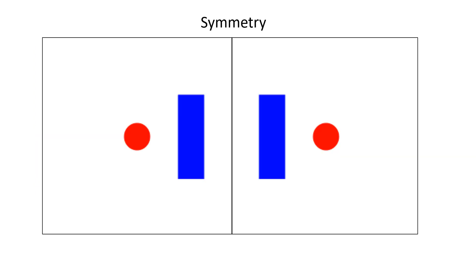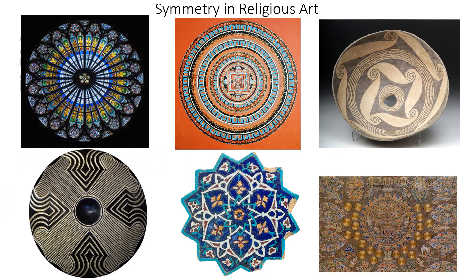Symmetry is where one side is a mirror image of the other — symmetrical compositions. Symmetry is used a lot in religious art in various cultures and religions, perhaps to suggest a perfect order that is more in tune with the spiritual world than the physical world that we inhabit.